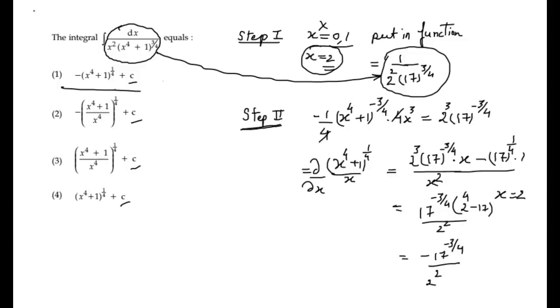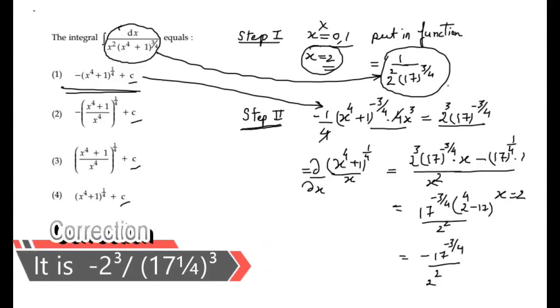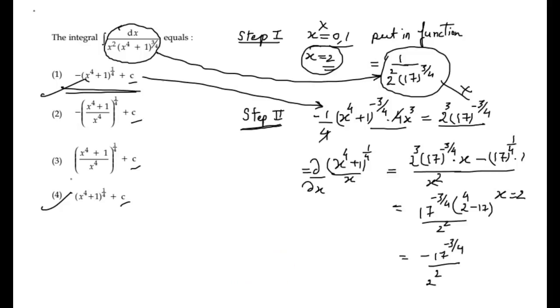So, differentiating the first option, we get the expression here. When we substitute 2, we clearly don't get the value we require. And option 1 and 4 differ by only sign, plus or minus. Hence, we can cancel these two options.